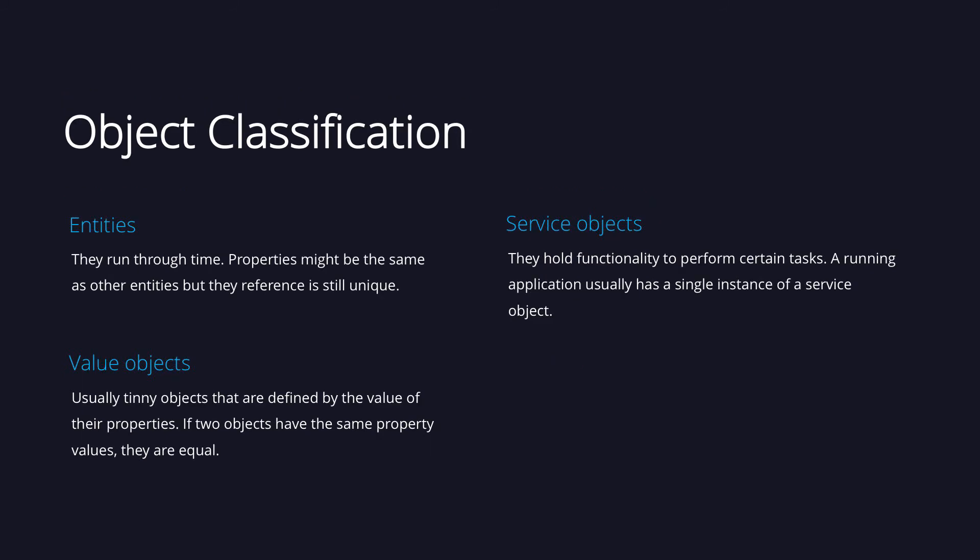In object oriented programming, data of an application is organized into objects. Software that follows domain driven design principles needs to classify the objects used in their system. This classification is done according to the object type. There are three main categories.